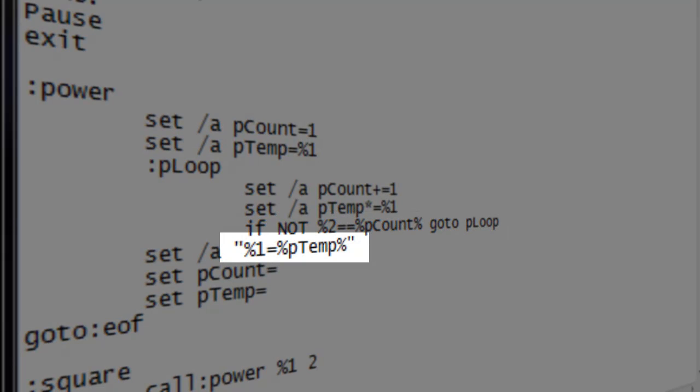After we have run the loop the correct amount of times, we set the first parameter to our result, returning our calculated value. We then clear our pcount and ptemp variables.